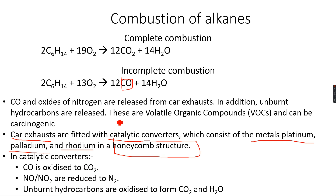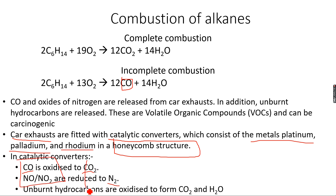The catalytic converter oxidizes carbon monoxide to CO₂ and reduces oxides of nitrogen — which, as seen in the nitrogen and sulfur chapter, contribute to acid rain — reducing them to nitrogen gas. Nitrogen and carbon dioxide are far less harmful than these pollutants, so it is safer to emit CO₂ and N₂.